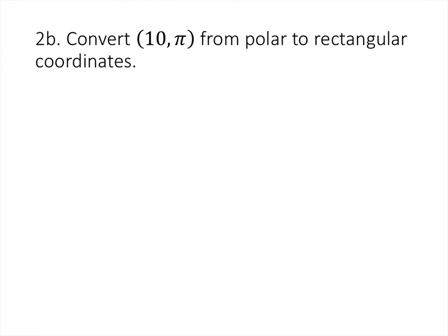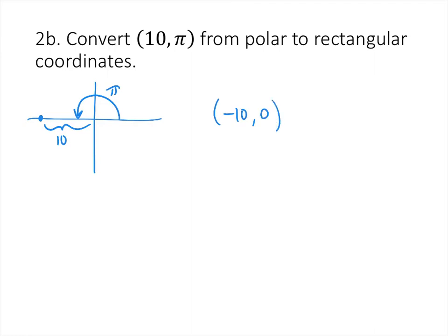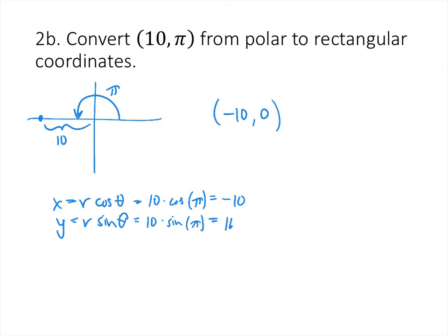For (10, π), since π represents half a rotation, and the point is 10 units from the origin, we can figure out the rectangular coordinates without the formulas. The x-coordinate is -10 (moved left of the origin) and the y-coordinate is 0. Using the formulas confirms this: cos(π) = -1 and sin(π) = 0, giving the same result.